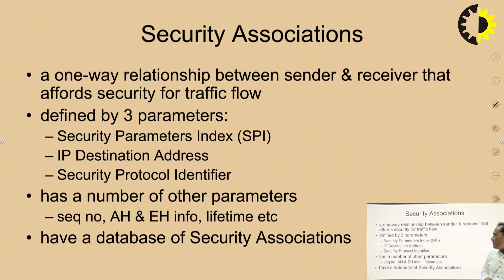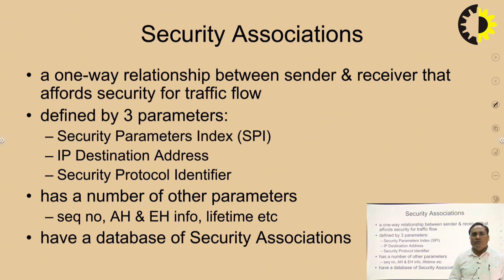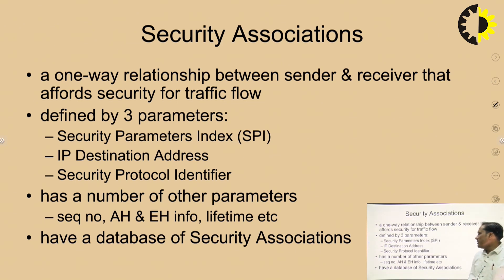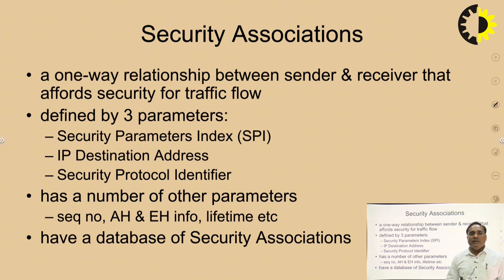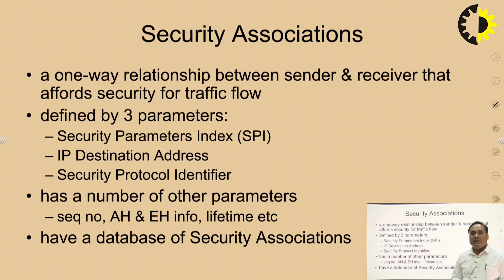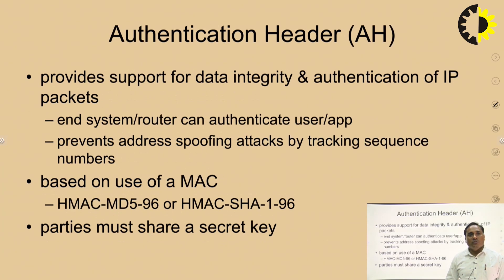Security association also has a number of other parameters given in the form of sequence number, AH and ESP information, lifetime, etc. These are the parameters when you are establishing a security association. The last point is that there is a database of security associations. By following the rules of the internet protocol security layer, it becomes the internet protocol security association.